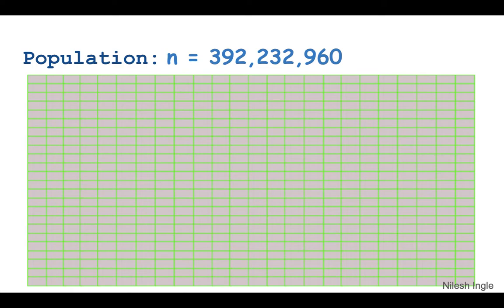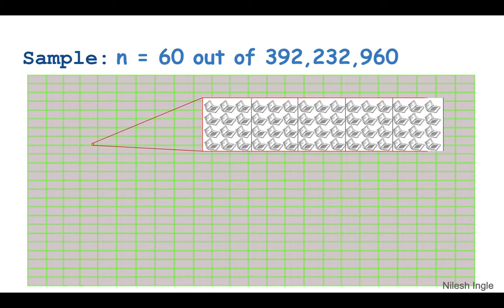Now because you cannot go and measure battery life for each of those laptops, what you do is pick a small subset of that. And let's say you picked 60 laptops from the entire population of those 392 million. And now that 60 laptops that you picked, that is called a sample.